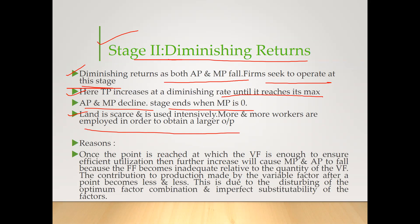The reason for diminishing returns is that fixed factors become inadequate relative to the quantity of the variable factor. The contribution to production made by the variable factor becomes less and less after a point. This is due to the disturbing of the optimum factor combination and imperfect substitutability of the factors. So stage 2 represents diminishing returns.